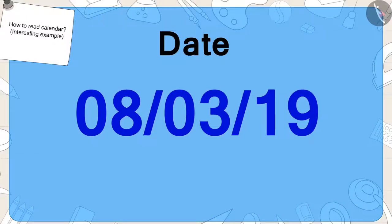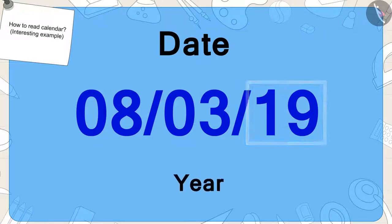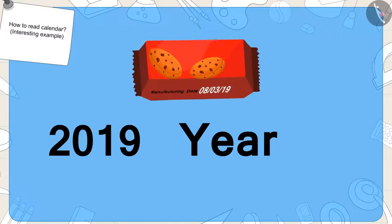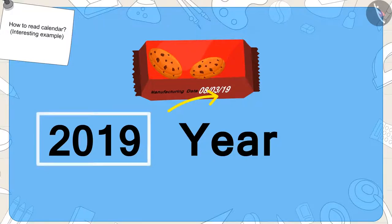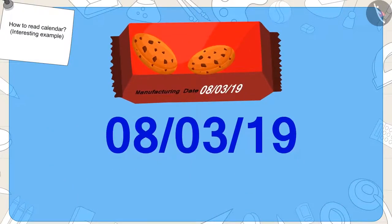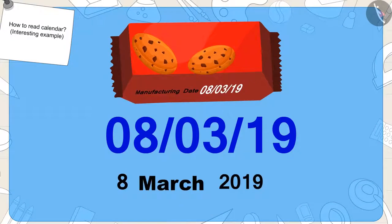And finally, the last number in the date written on the pack of biscuits represents the last two digits of any year. Like, the number 19 on the packet of Golu's biscuits here — this represents the last two digits of the year 2019. So, what was the date written on Golu's pack of biscuits? Yes — 8th March, 2019.